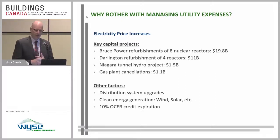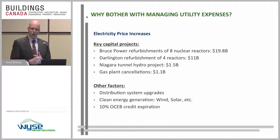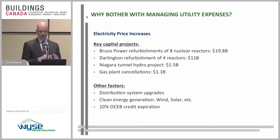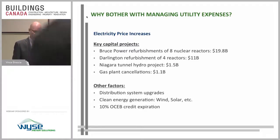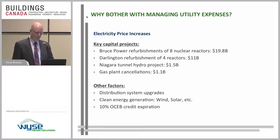Your key utility costs are planned to rise significantly over the next little while. Looking at just the electricity sector, there are major investments the province is going to make in the electricity system that will have to go into rates. The Bruce Power refurbishment is about 20 billion dollars, there's another 11 billion dollars for Darlington — both core elements of electricity supply in Ontario that have to be paid for. The Niagara Tunnel project, already completed, where they built a large tunnel to make better use of Niagara Falls for electricity generation, hasn't been fully put into rates yet.